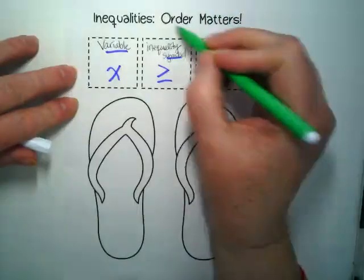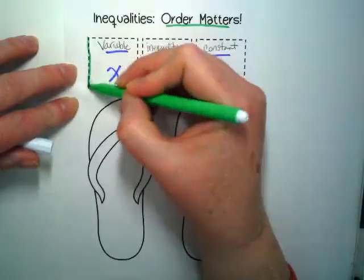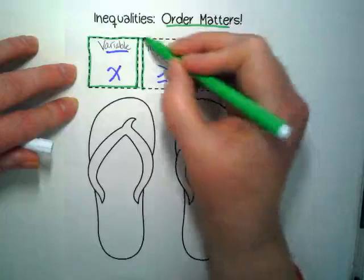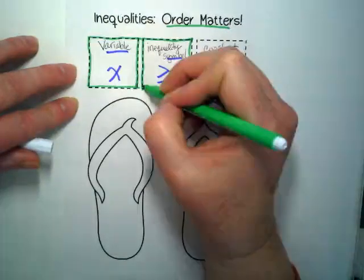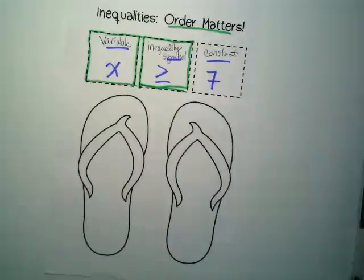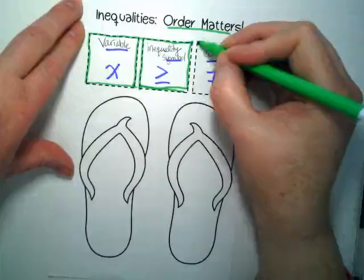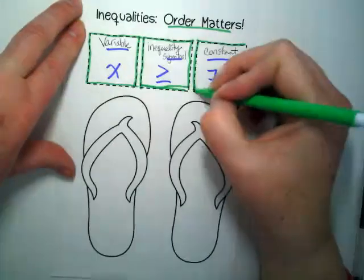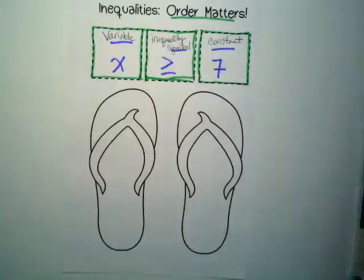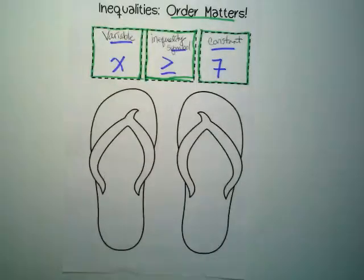Go ahead and use your other color to do some decorating around those boxes. Think about an inequality statement as three pieces, and these pieces can be moved. If you end up with an inequality where the number is on the left and the variable is on the right, we want to be able to flip them.